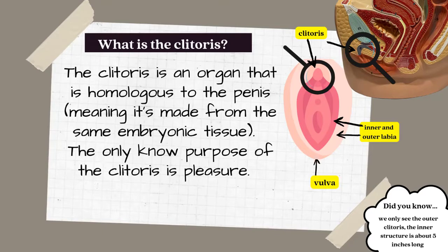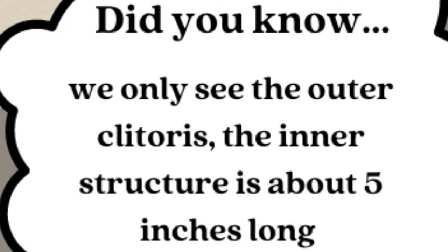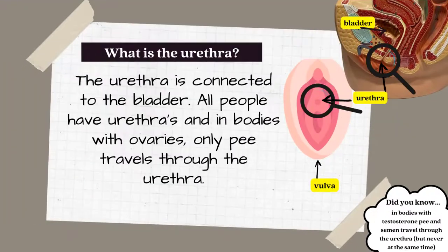The clitoris is an organ that is homologous to the penis, meaning it's made from the same embryonic tissue. The only known purpose of the clitoris is pleasure, and it's located just at the front of the vulva, generally underneath the clitoral hood — a little bit of skin that covers it. Did you know we only see the outer clitoris? The inner structure is about five inches long.